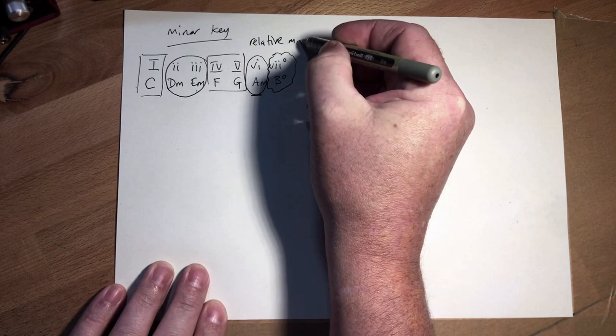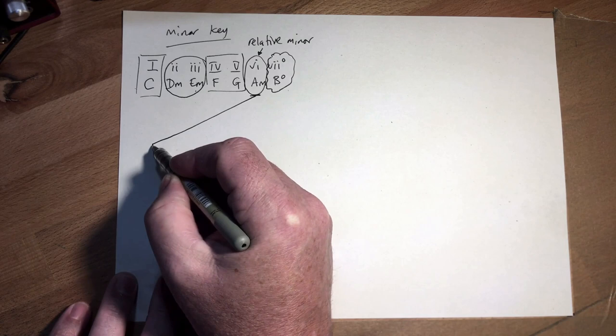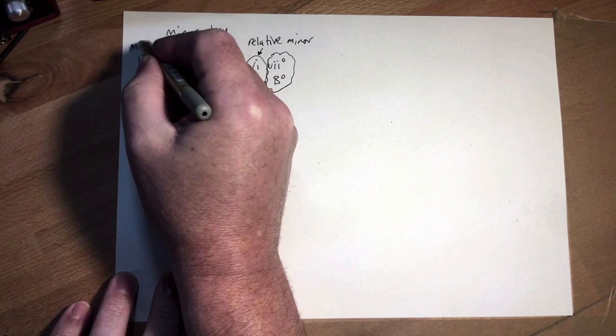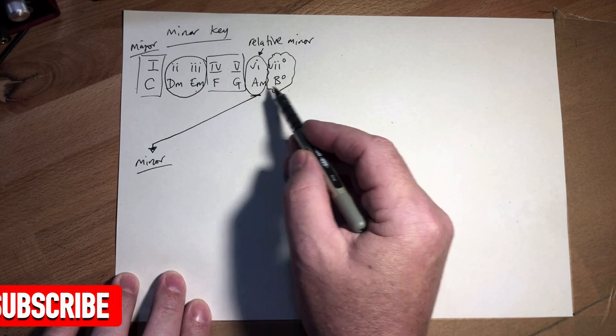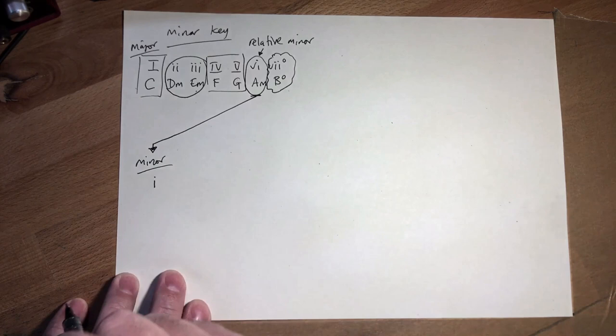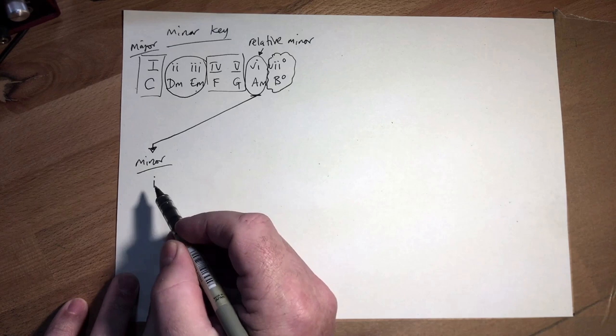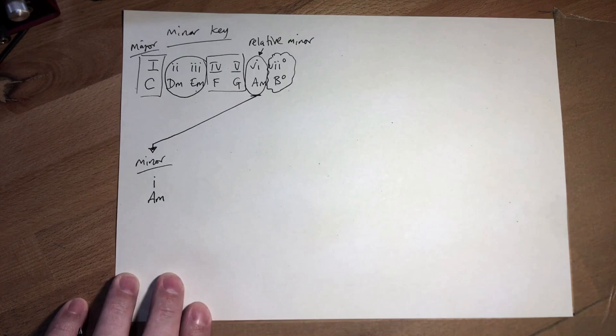So we take chord number 6. If you're playing in the major, you may see this called the relative minor. What happens is A minor becomes the most important chord. This is the major key, and then what we're going to do is arrange these into the minor key — it's pretty simple. All we do is keep the same sequence of chords but start on chord 6, and we name that as chord 1, written in lowercase because it's minor. This means we have a key of A minor — this is the relative minor.